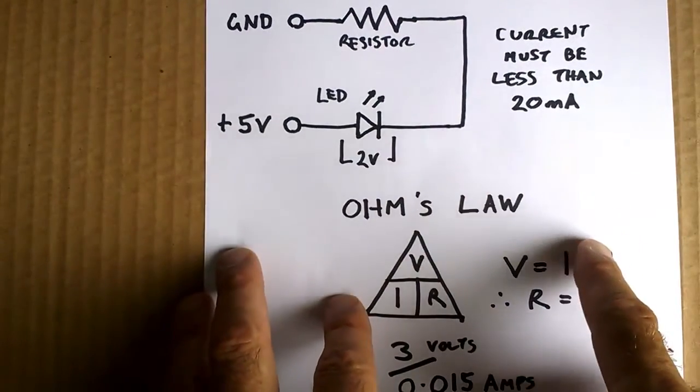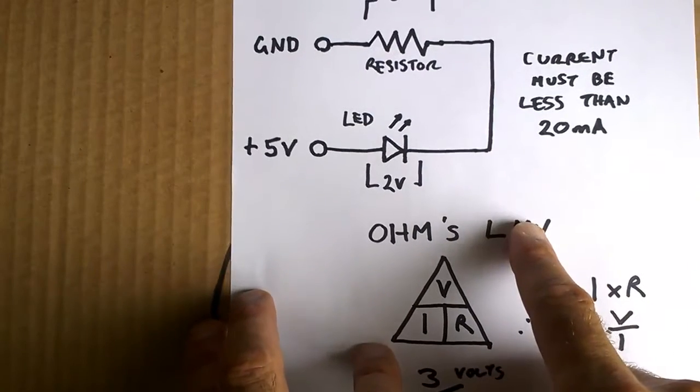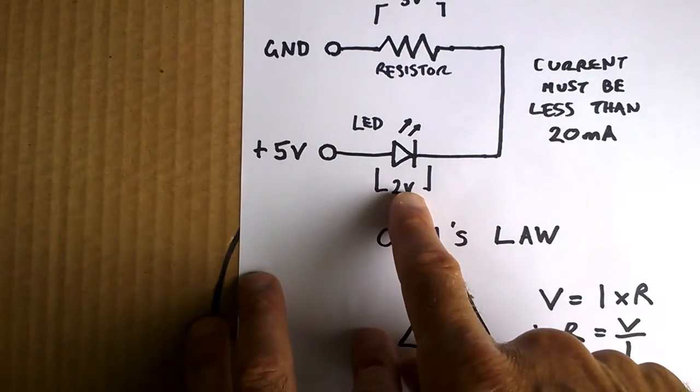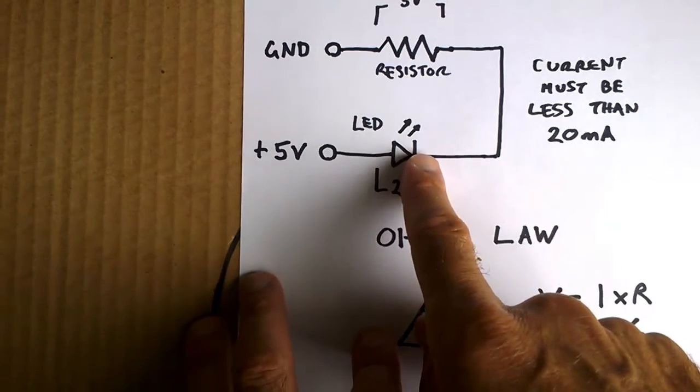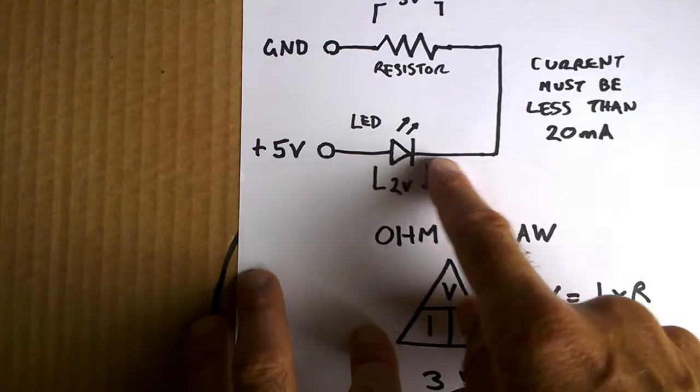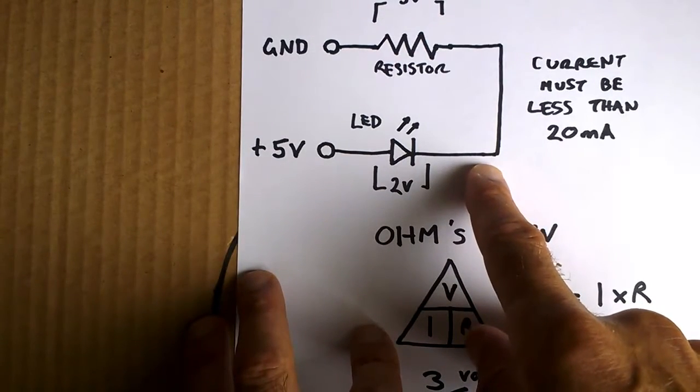So we can use Ohm's Law to work this out. Our voltage that we need to work with is our 5 volts minus the 2 volt drop over the LED, which gives us about 3 volts. So if you had more LEDs in series here, you would need to adjust this further.